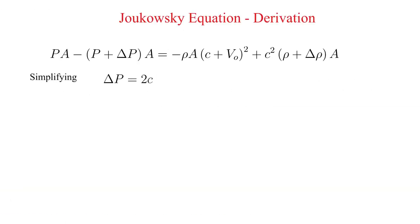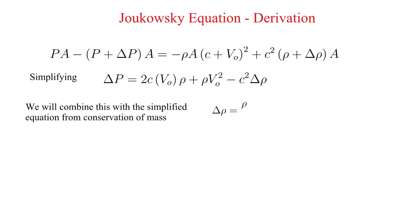Let's do some algebra and simplify. Recall that from conservation of mass, we determined that delta rho is equal to rho times V0 divided by the celerity. Combining, we get that delta P is equal to rho times the quantity celerity times V0 plus V0 squared. We are almost done.